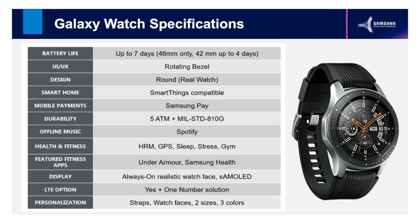Now let's look at Galaxy Watch specifications. This is the newest watch in the market right now. We have bumped up the battery — it lasts up to seven days. There is a rotating bezel and the display is round. It is compatible with Samsung Pay and SmartThings, and durability is 5ATM. We have useful apps like Spotify, which provides offline music. There are many sensors: heart rate monitor, GPS, sleep sensor, stress tracking, and many applications compatible with gym equipment.